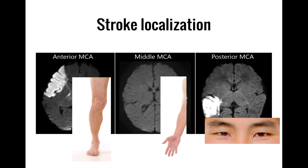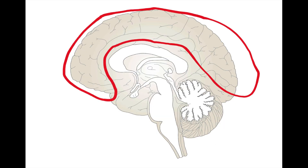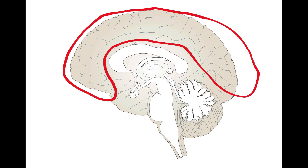You look at what functions have been affected and in what areas, and using what we've learned about how these different functions map to different parts of the brain in all the videos in this series so far, you can figure out where the stroke has likely occurred. In this video, we'll first learn how to localize strokes in the cerebral cortex and then discuss strokes in the subcortex. In the next video, we'll finish off with strokes in the brainstem. So first, cortical strokes.